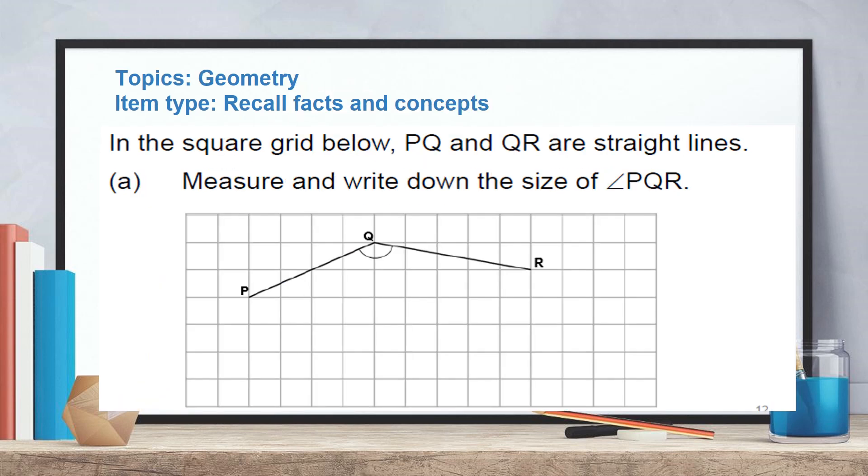This is another type of example on geometry. Recall facts and concepts. Measure and write down the size of angle PQR. So students in this case just need to recall how to use a protractor to measure angle and how to do it accurately.